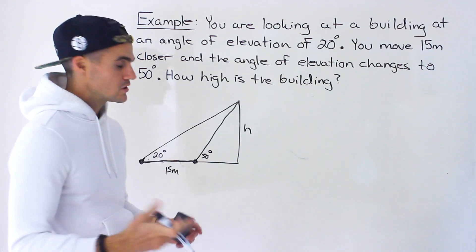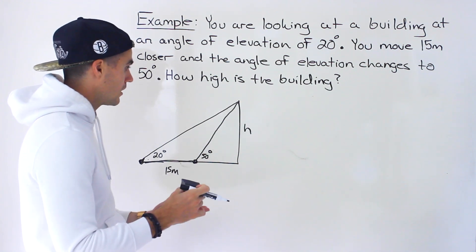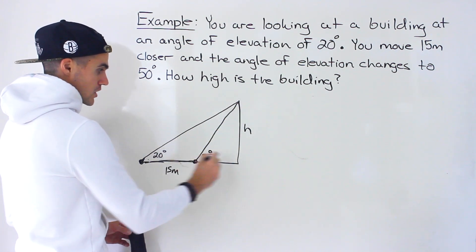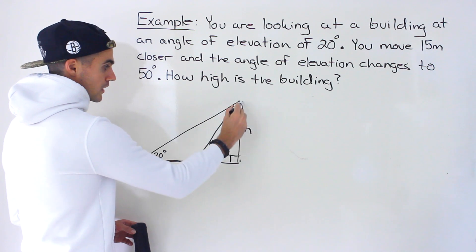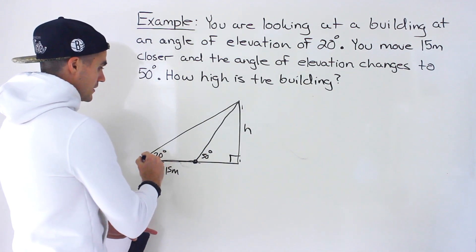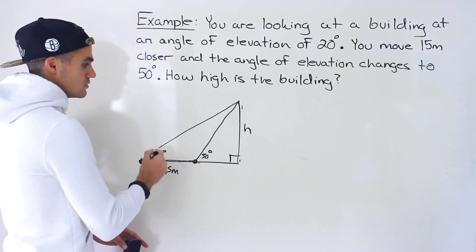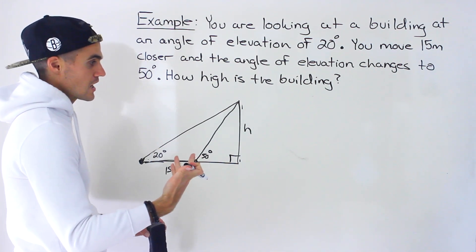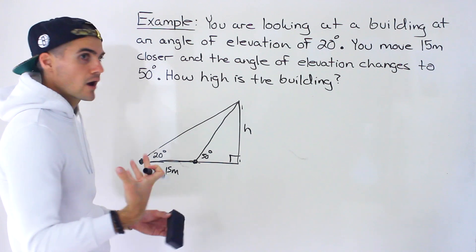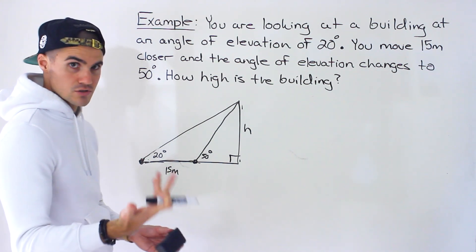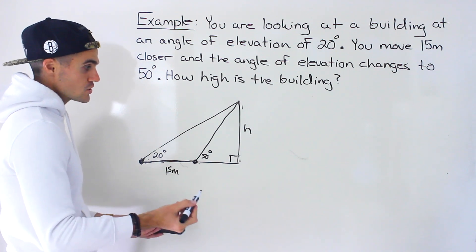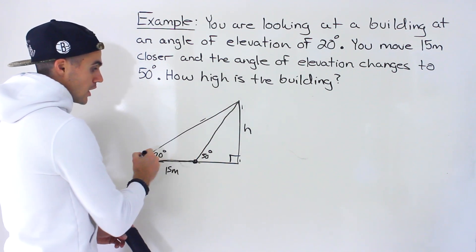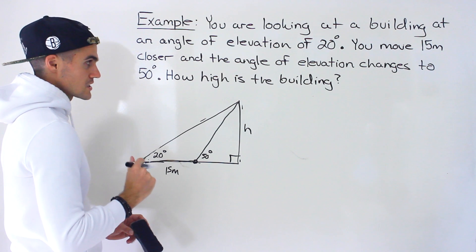There are actually multiple ways to do this. You can use something called the sine law, using a third triangle formed in the diagram. Notice there are three triangles — the large right angle triangle, the smaller one, and a third non-right angle triangle. We haven't covered sine law in this course yet, so I'm only going to use the primary trig ratios: sine, cosine, or tangent. To use those, you need right angle triangles, and the third triangle here is a non-right angle triangle, which we'll cover in the next unit.